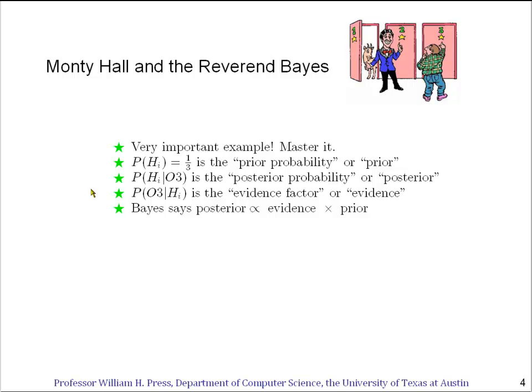The probability of the hypothesis after we've seen the data is called the posterior probability, or just the posterior. The probability of the data given the hypothesis — because that's the computable thing: as soon as you say 'given the hypothesis,' you have something definite you can compute — and that has a name: it's called the evidence factor, or the evidence.